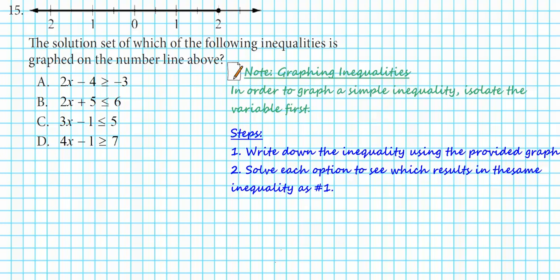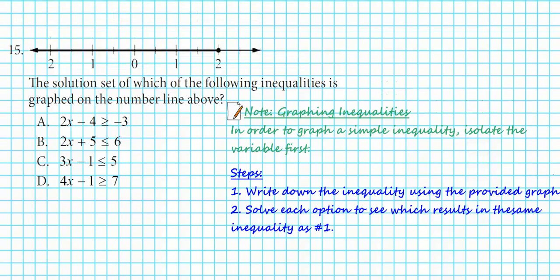Let's take a look at question number 15. It says: the solution set of which of the following inequalities is graphed on the number line above? To graph a simple inequality on a number line, you want to isolate the variable first. Our approach: first find the symbolic representation of the graphed inequality, then solve each answer choice to see which one matches.